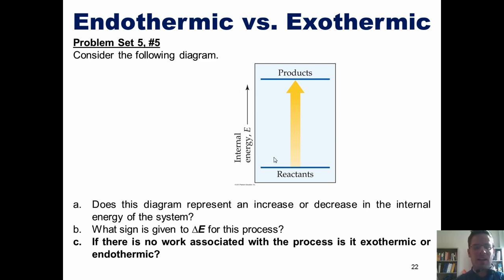What sign is given to delta E for this process? Once again, in order to move reactants, my system, from a lower energy level to a higher energy level, they have to have absorbed energy from the surroundings. Thus, we would say that delta E is positive, because there's been a positive net deposit into the system's energy bank account by the surroundings.